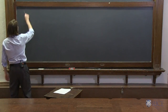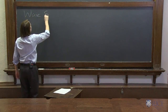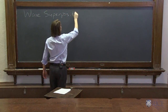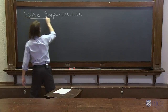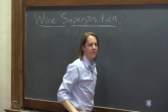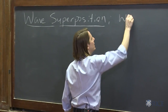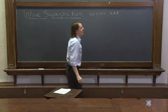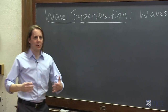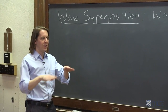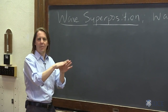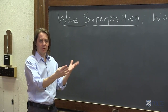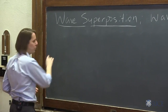We'll next talk about wave superposition, which is really just a fancy way to say that waves add. If you have one wave on a string and another wave on a string, described by some function, you just add the two functions — that's what the string does. It just supports both waves.